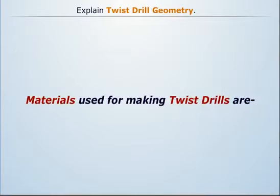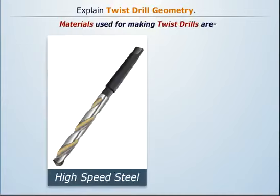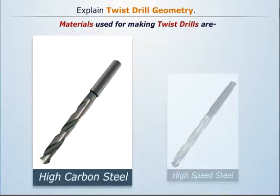The most common materials used for making twist drills are high-speed steel and high-carbon steel.